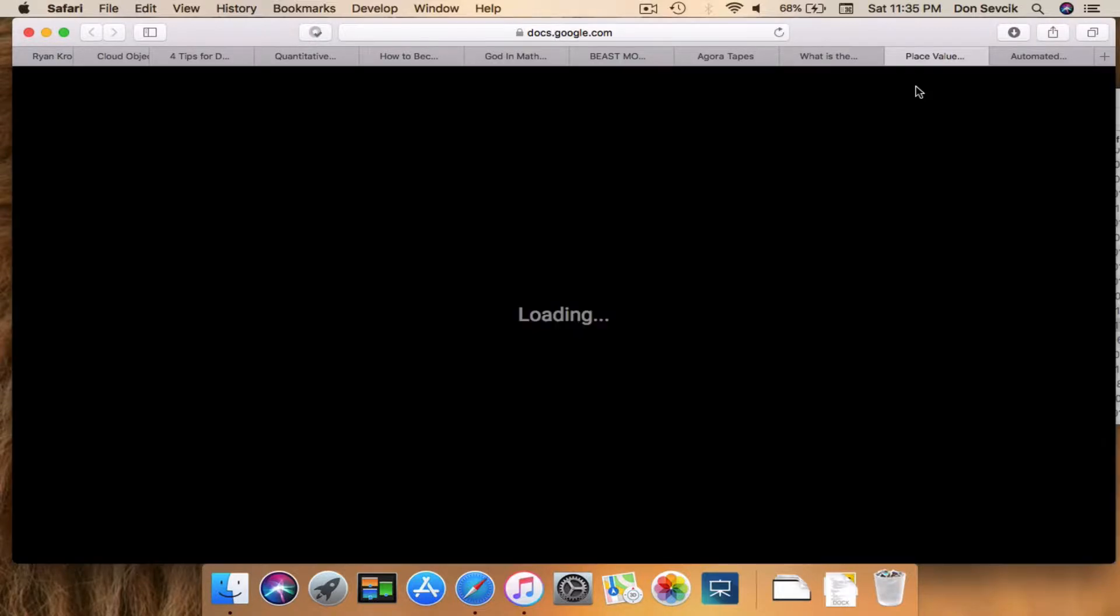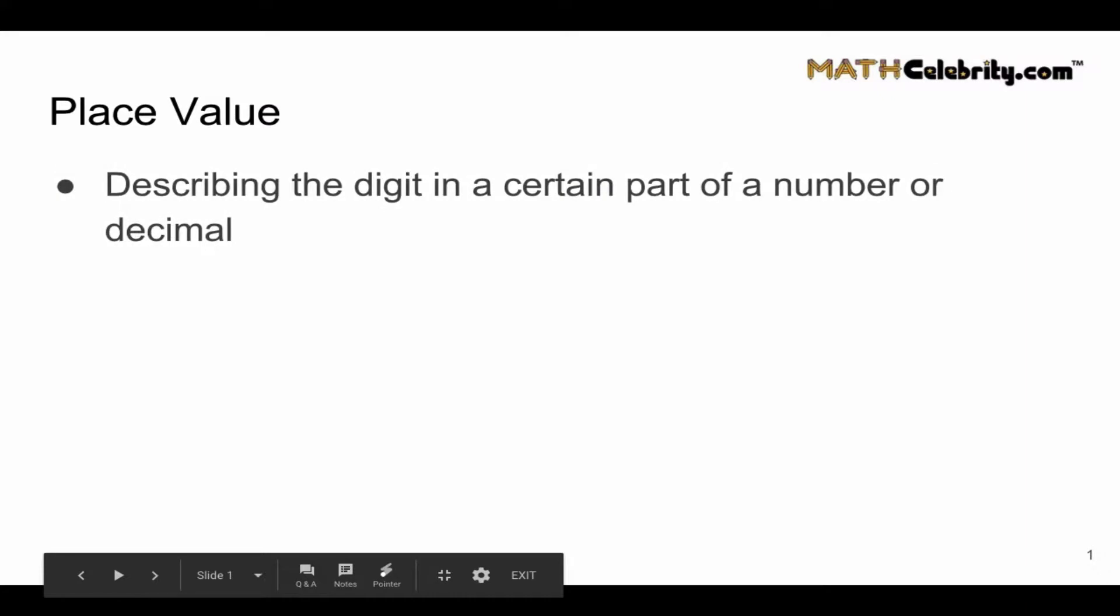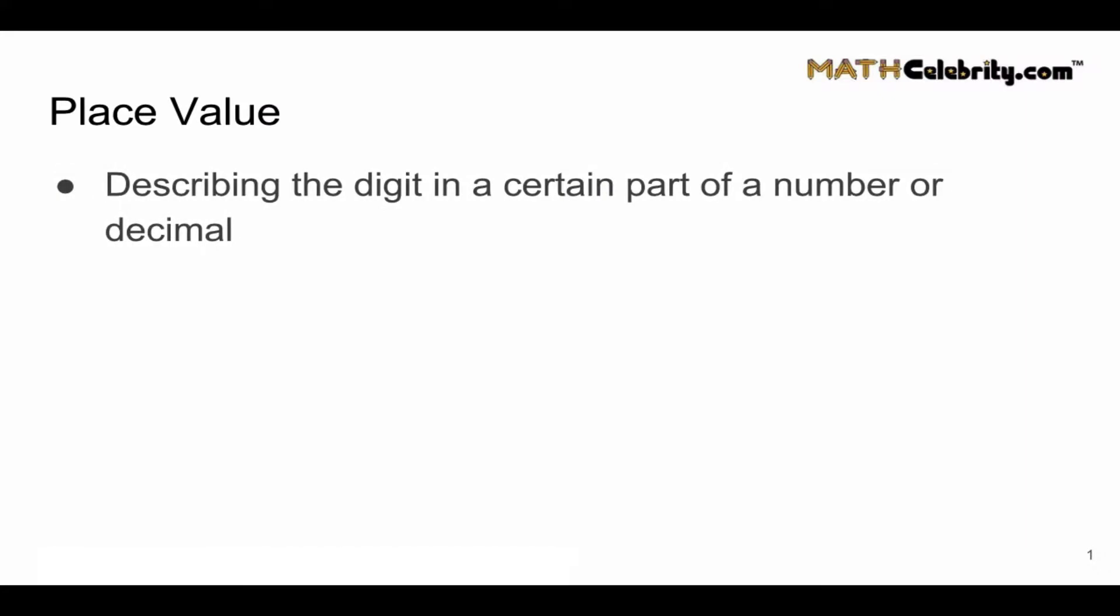Let's get started. Now when a problem asks you to determine place value, what they want you to do is to describe the digit in a certain part of a number or a decimal. And remember, each digit in a number, whether it's to the left or the right of a decimal place, has a different place value assignment.